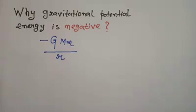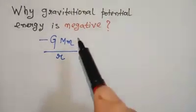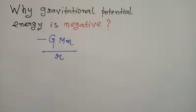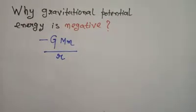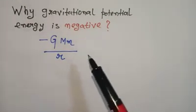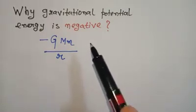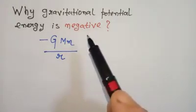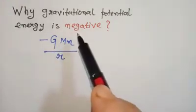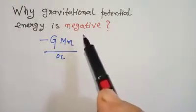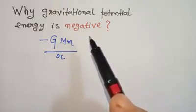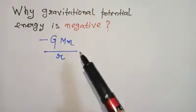Hello and good evening. The particular topic we would be dealing with in this video is why gravitational potential energy is negative. In the previous video, we calculated a lot regarding the values of gravitational potential and gravitational potential energy. We need to really understand why this minus sign comes in. I have shown different ways of calculating it in the previous video, and this is just a summary.